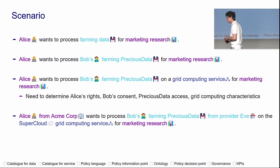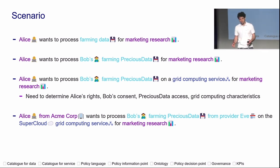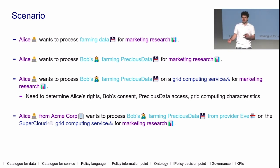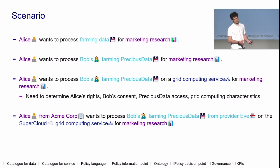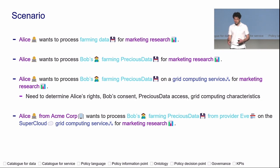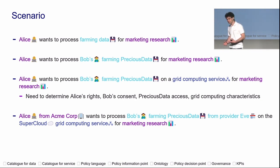Governance is probably the most complicated word I will use today. Alice from Acme knows nothing about Bob's. Maybe they have nothing in common with Super Cloud. Super Cloud doesn't know Bob. Eve has maybe no idea about Super Cloud. So we need a governance of all those rules and how they play out. The last one is KPIs — key performance indicators — because we don't live in a binary world. We need to be able to measure and navigate through that scenario.